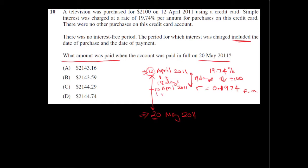And from the 1st of May to the 20th of May, that's easy. There's 20 days. So 20 days plus 19 days gives us a time period of 39 days. So that's our time.